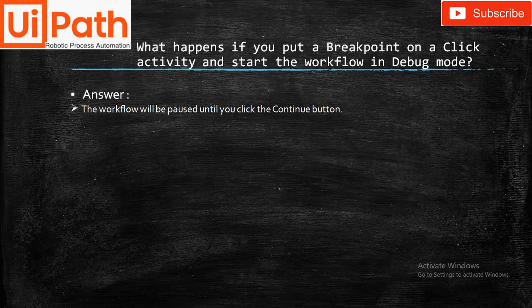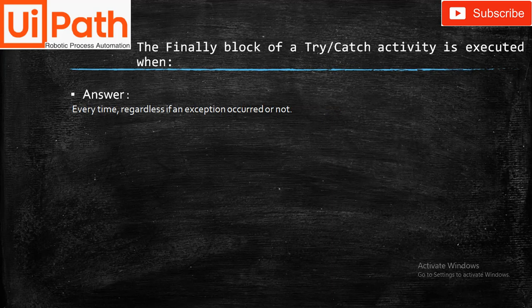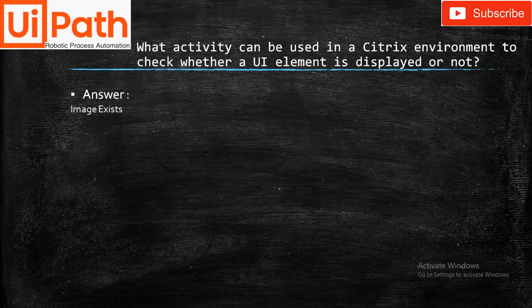When you have more than one exception type in a Catch block, which block is executed? The block with the most specific match. If you put a breakpoint on a Click activity and run in debug mode, the workflow will pause until you click the Continue button. The Finally block in a Try-Catch activity always executes regardless of whether an exception occurred. In a Citrix environment, to check whether an image is displayed, use Image Exists.